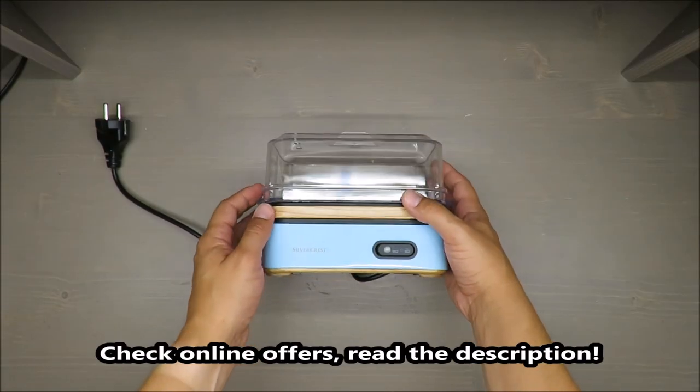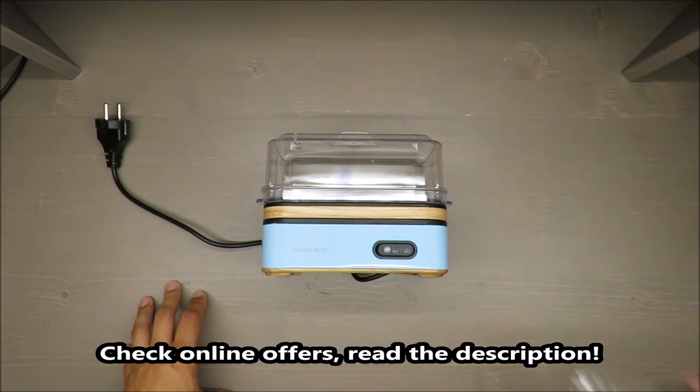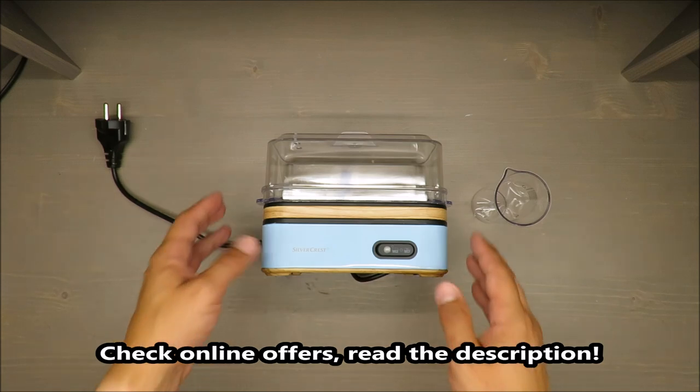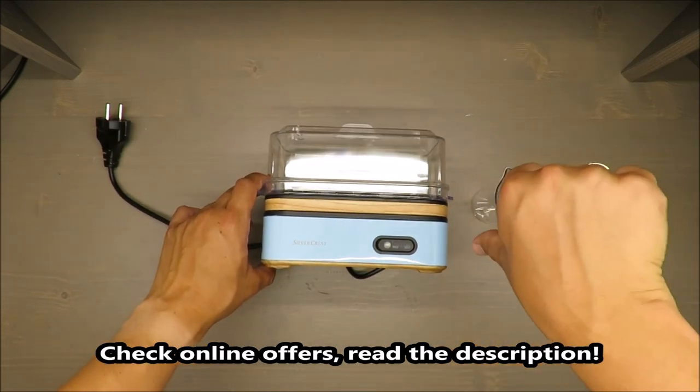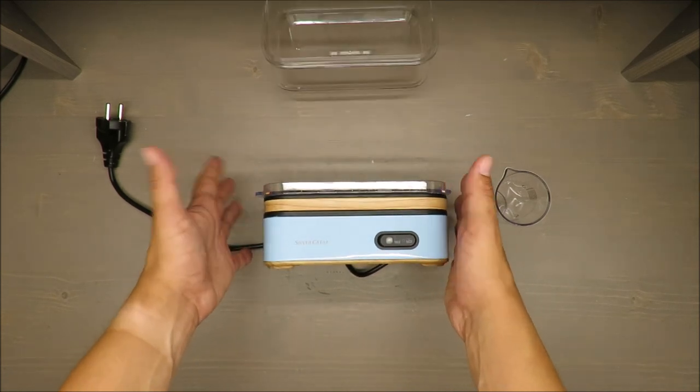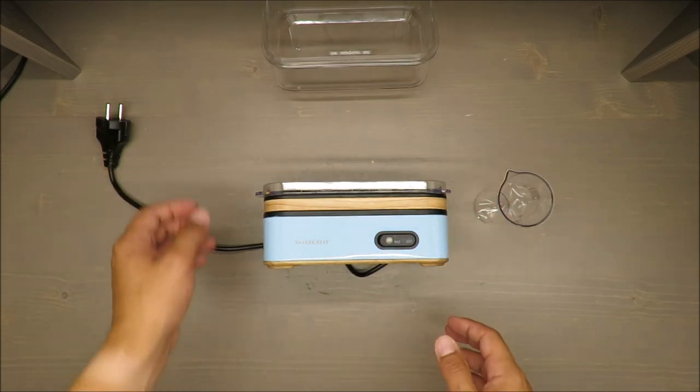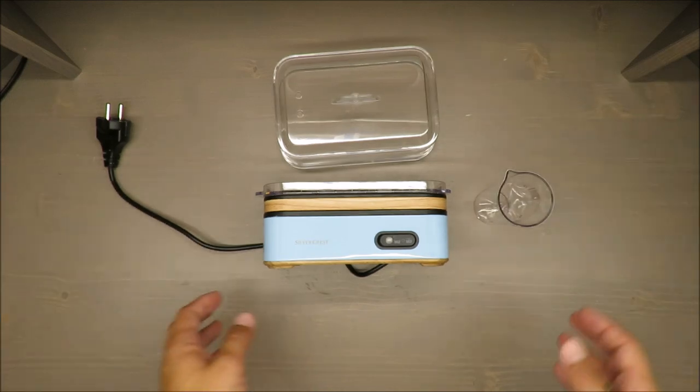Hello everybody, this is Out of the Box Unboxing. In today's episode I'm going to review this egg cooker from Silvercrest, available in LIDL. On the beginning, my judgment: I'm not recommending this device. If you want to know why, please stay tuned till the end of this video.